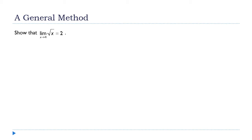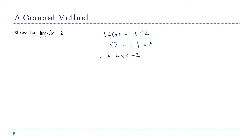Our method says: look at |f(x) - L| < ε and solve for x. I'm going to substitute √x for f and 2 for L. To solve this absolute value inequality, this becomes: -ε < √x - 2 < ε.